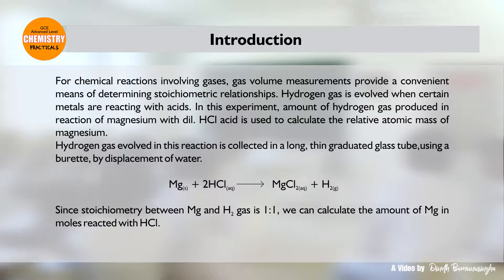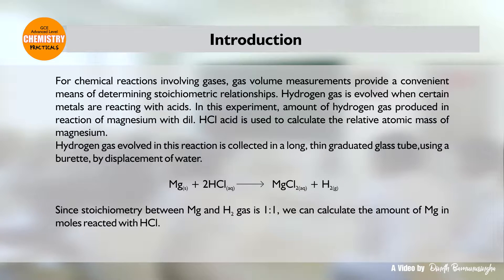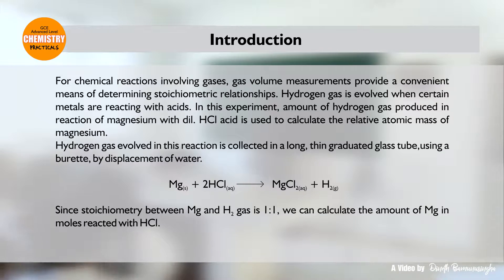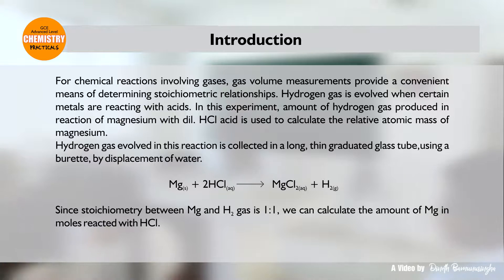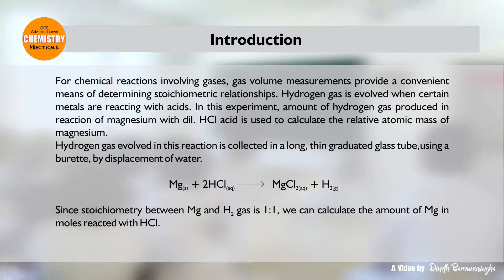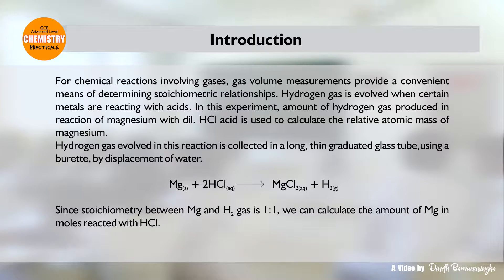Hydrogen gas evolved in this reaction is collected in a long, thin, graduated glass tube — a burette — by displacement of water. Since the stoichiometry between magnesium and hydrogen gas is 1:1, we can calculate the amount of magnesium in moles that reacted with HCl.